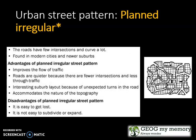Your planned irregular pattern is where the roads have few intersections and tend to curve a lot. It is found in modern cities and newer suburbs. Advantages include improved flow of traffic, quieter roads because there are fewer intersections and less traffic, interesting suburb layouts with unexpected turns in the road, and it accommodates the natural topography. Its disadvantage is that it is easy to get lost and it is not easy to subdivide or expand.